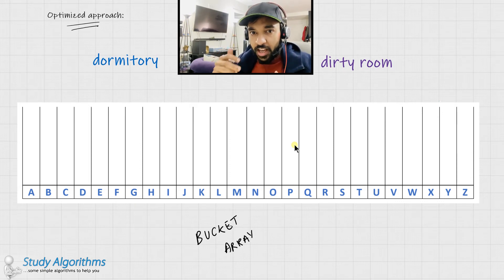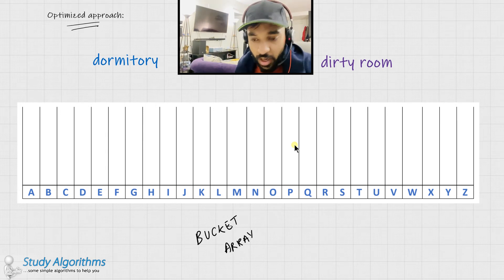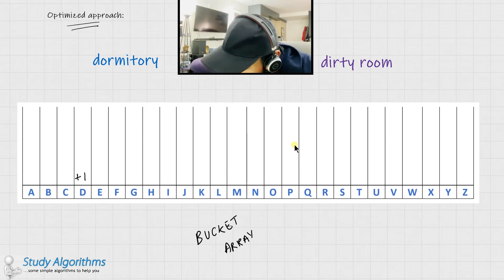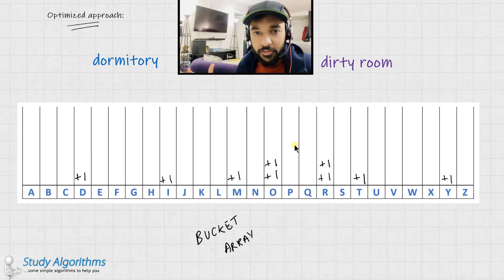What we can do is, we can scan our first string and increment the frequency of each of the characters in this bucket. Let us see what happens when I try to increment these frequencies with my first word that is dormitory. So, I get at D and then I would increment the frequency over here to 1. Going over to O, I add 1. Going over to R, I'm adding 1. Then M, I add 1. Then I, I add 1. Then T, I add 1. O, I again add 1. R, I would add 1. And then Y, I add 1. Now, this bucket array has the frequency of all of the characters that I have in my first string.